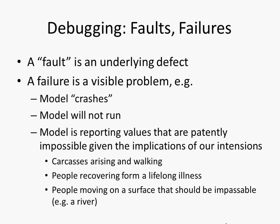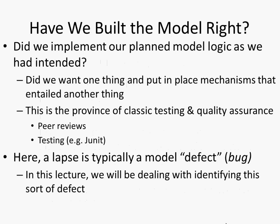Another example would be if you had a model of a lifelong illness like diabetes, where in your intentions no one should ever recover, but they do. Or there's people moving around who should be blocked by the presence of water like a lake or river, and they start walking on the water. That would be an indication that something is off in your model logic. We're talking here about model defects focusing on the issue of have we built the model right. These faults are often the result of oversight or logical mistakes.